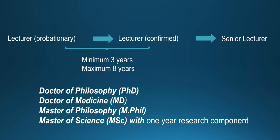The postgraduate qualifications necessary to become a confirmed lecturer or to progress into senior lecturer are: PhD (Doctor of Philosophy), MD (Doctor of Medicine), MPhil (Master of Philosophy), or an MSc with at least a one-year research component. If you get one of these degrees within the required time period, you will be confirmed in your position.